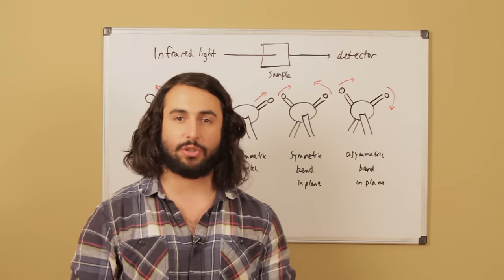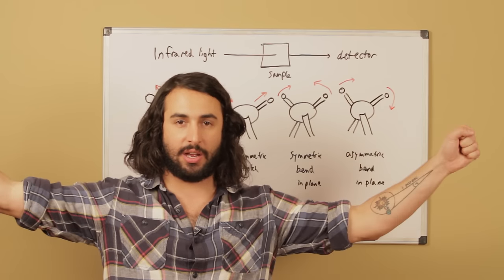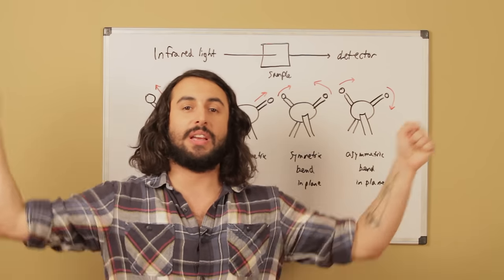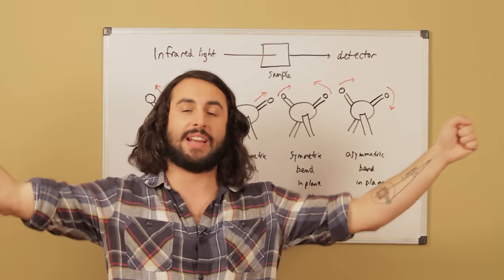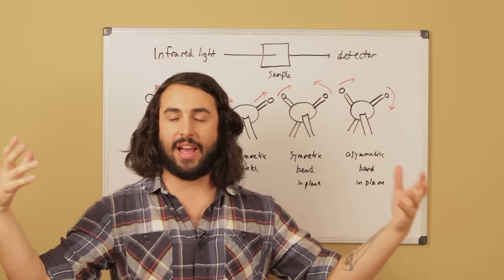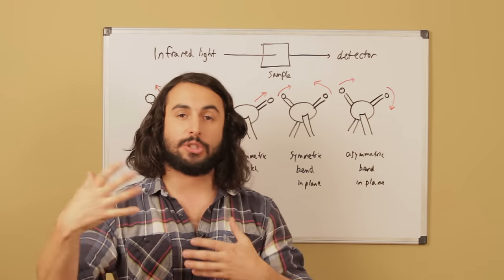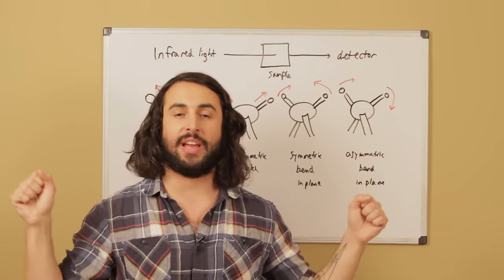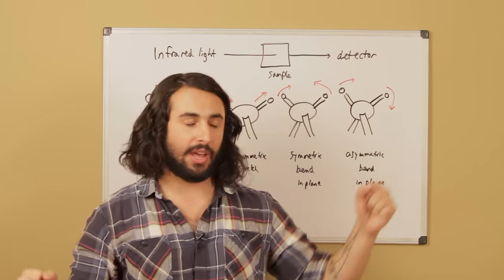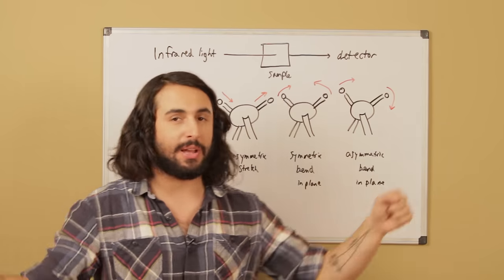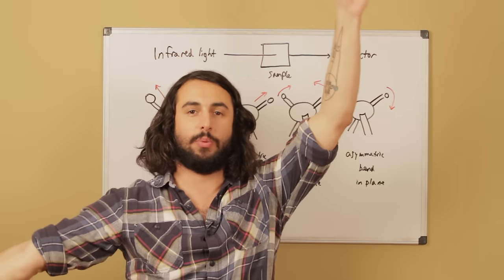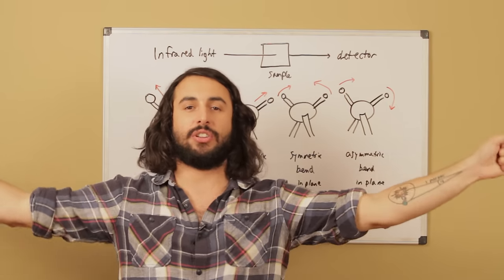Let's say my body is the central atom and my arms are the atoms it is bound to — my arms represent covalent bonds. This would be a symmetric stretch: the covalent bonds contracting and expanding at a particular vibration when a specific photon of IR light is absorbed. This is a symmetric stretch; this would be an asymmetric stretch. We can also have a symmetric bend or an asymmetric bend in-plane.